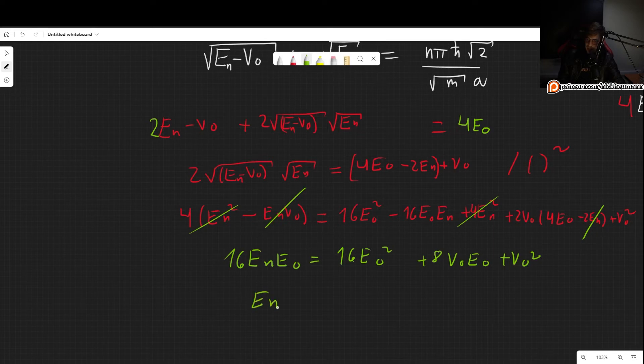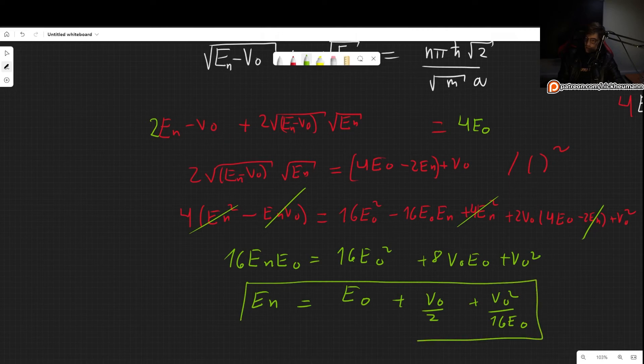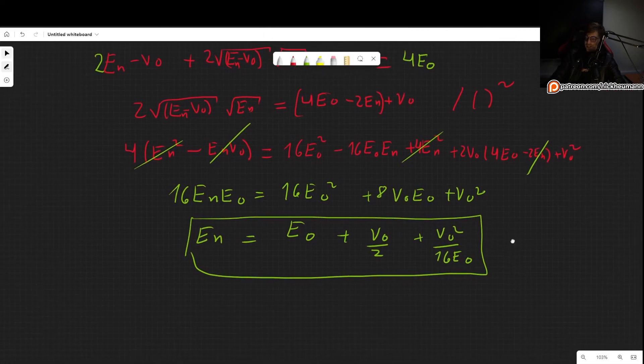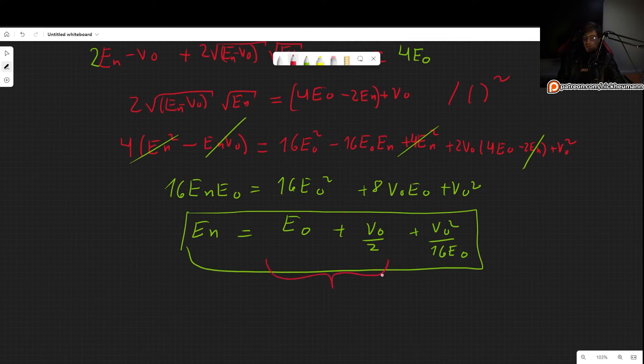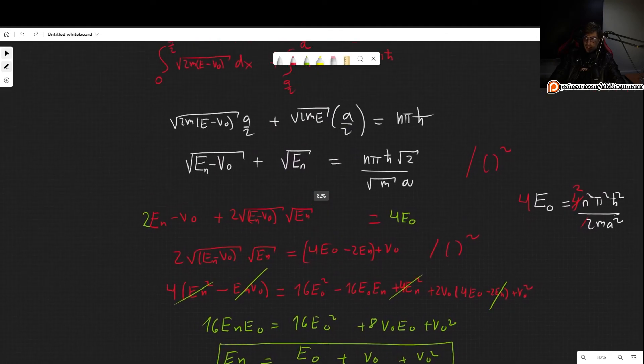So let's now isolate our energy. We get EN equals E0 plus V0 over 2, and then finally plus V0 squared divided by 16E0. And there we go! Notice that this is precisely—at least this first part is exactly what we got using perturbation theory before. And this extra term is negligible if V0 is very small, which is precisely the case in which we did this using perturbation theory. So this result does indeed agree with what we had found in the past.